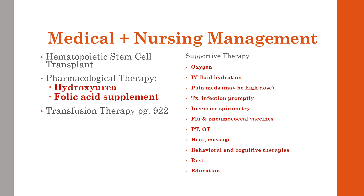Hydroxyurea is a chemotherapeutic agent that increases levels of fetal hemoglobin and decreases the formation of sickled cells. It is the only current FDA-approved drug for treatment of sickle cell disease. Studies show it decreases episodes of painful crisis, acute chest syndrome, need for blood transfusions, and decreases mortality from sickle cell disease by 40%.